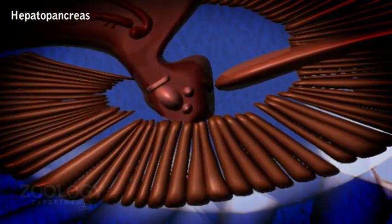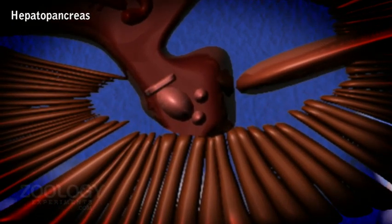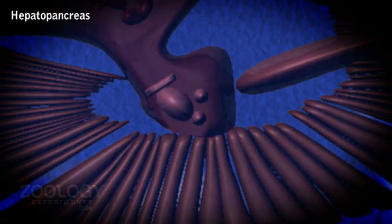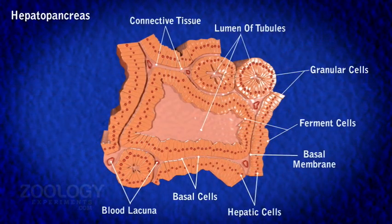The hepatopancreas is a large bilobed dense orange glandular mass which lies below the gonads and nearly fills up the cephalothoracic cavity. It surrounds the stomach on its lateral, ventral, and posterior sides. Hepatopancreas combines in itself the functions of the pancreas, small intestine, and liver of higher animals. Functioning as the pancreas, it secretes digestive enzymes which can digest carbohydrates, proteins, and fats. As the midgut, it absorbs the digested food material, and as the liver, it serves as an important storage organ for glycogen, fat, and calcium. Some intracellular digestion also seems to take place.